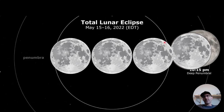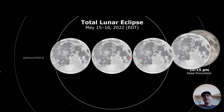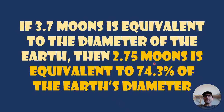I used that video and scaled a moon to the size of the moon they were using and placed it on this background with their scale representation of the umbra. I didn't even make them touch. So this is roughly, give or take, 2.75 moons fitting across the Earth's umbra. So what does that mean? If 3.7 moons is equivalent to the diameter of the Earth, then 2.75 moons is the equivalent of 74.3% of the Earth's diameter. So the umbra in relation to the Earth's diameter reduced only 25.7% — that's a small reduction.